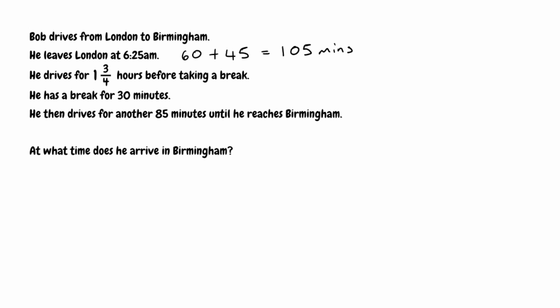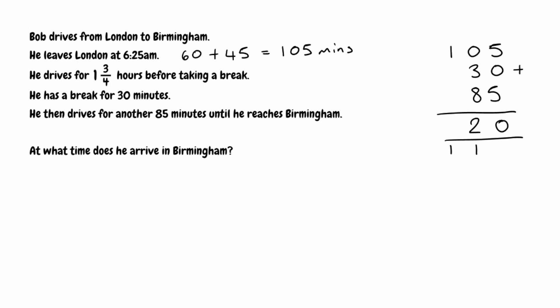He then has a break for 30 minutes, and finally drives another 85 minutes to reach Birmingham. Adding all the times together: 105 plus 30 plus 85. Adding these up gives us 220. So in total, Bob's entire journey is going to take 220 minutes.